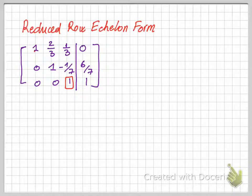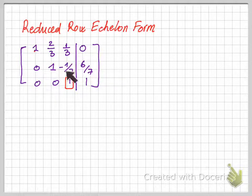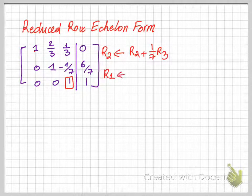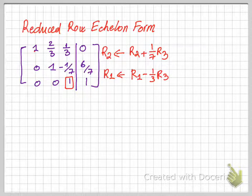We need to make sure that the pivot value is the only non-zero value in its column. That means we need to transform row 1 and row 2 such that these two values become zero. We'll use two row operations: row 2 is transformed by taking row 2 plus 1/7 of row 3, and row 1 is transformed by taking row 1 minus 1/3 of row 3.